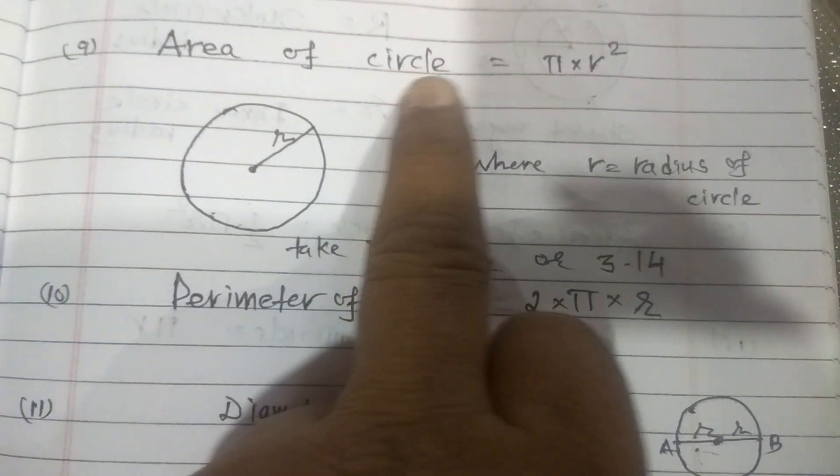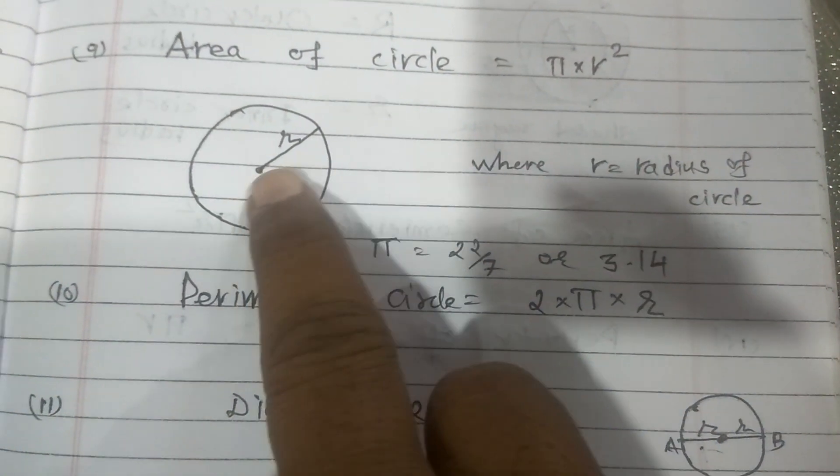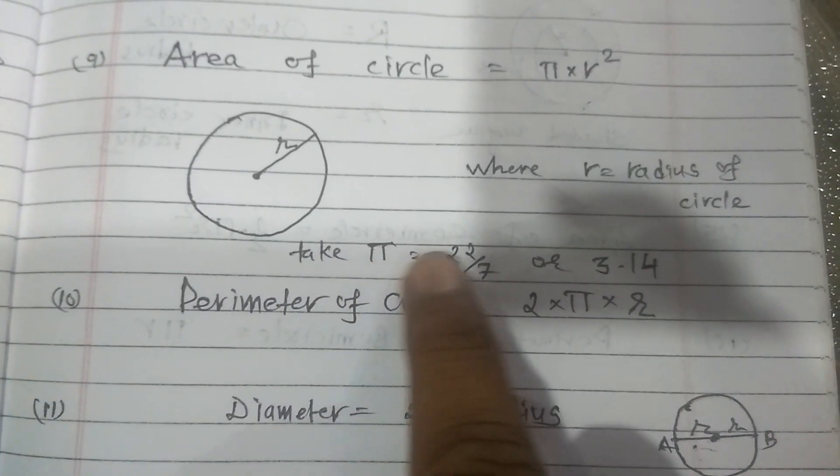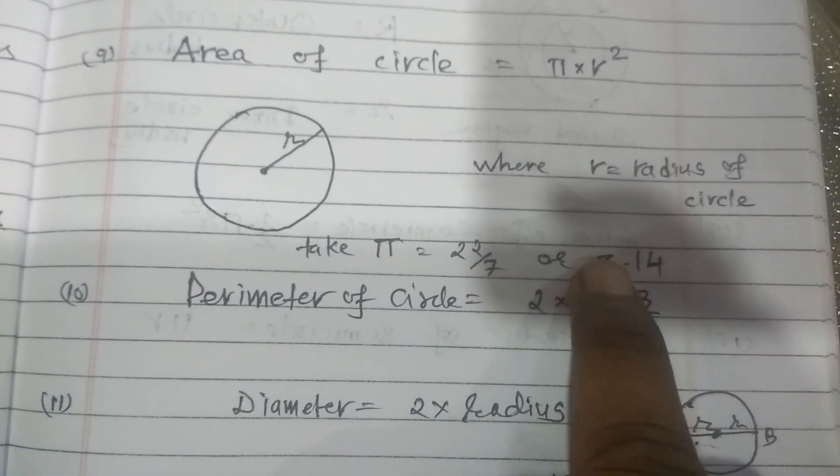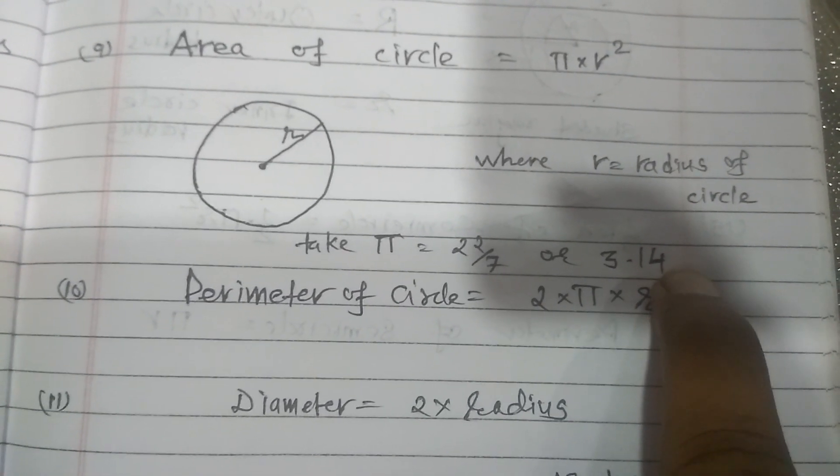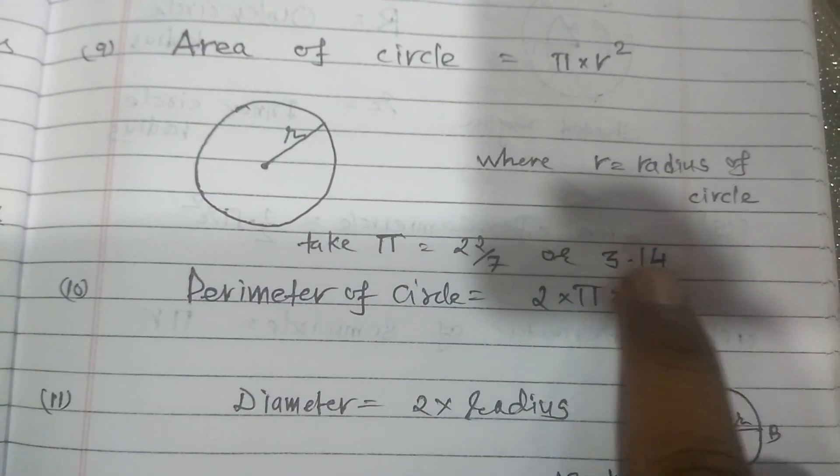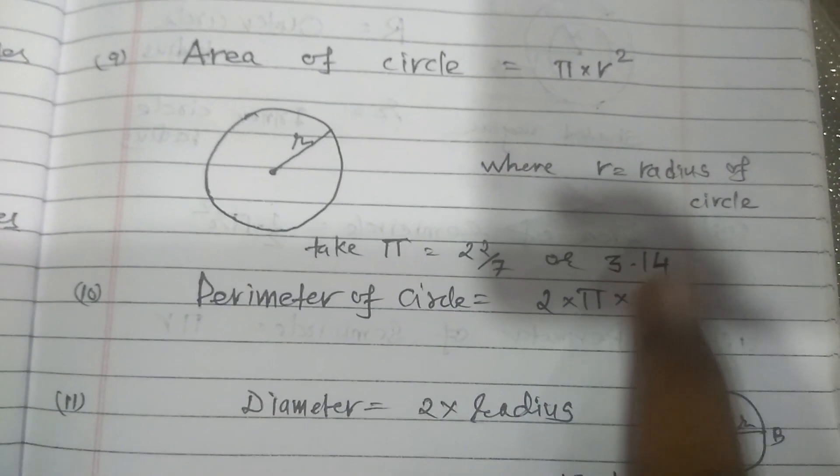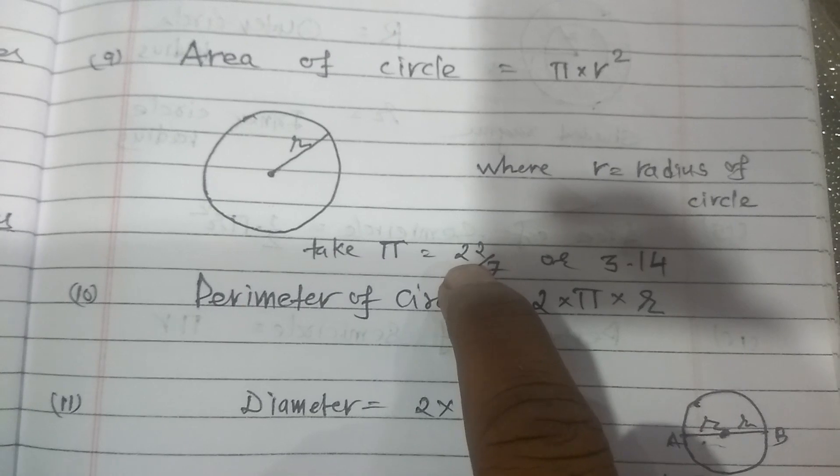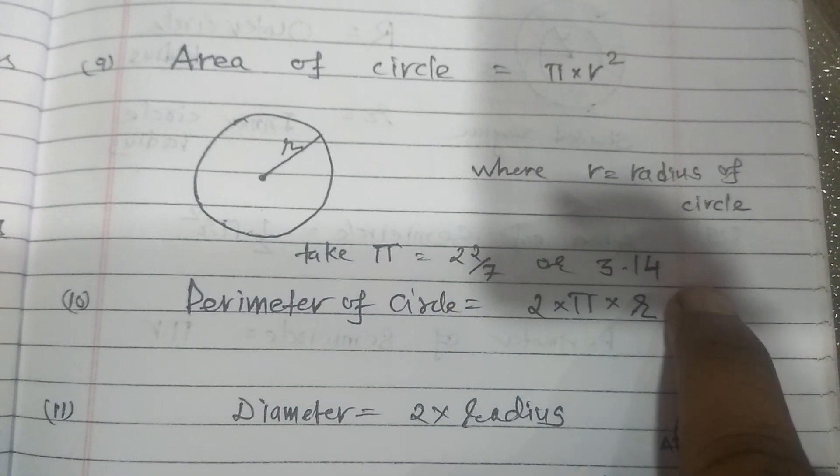Here, area of circle is equal to pi R square, where R is the radius of the circle. Take pi equal to 22 upon 7 or 3.14, wherever our calculation becomes convenient. As per that way we have to take the value. We will see in the numericals when we use pi 22 upon 7 and 3.14.